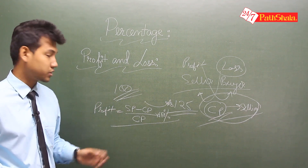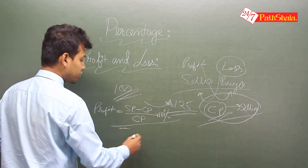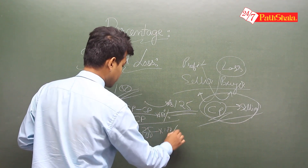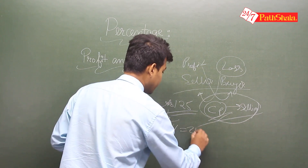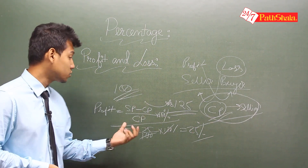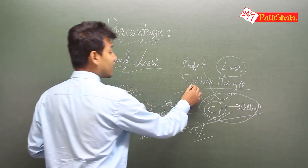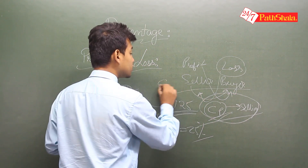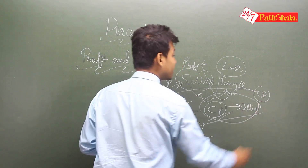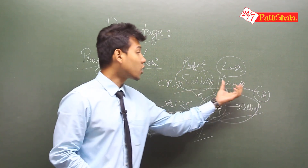In this case, SP minus CP is 125 minus 100, which gives 25, divided by 100, multiplied by 100 percent — so this is 25% profit. Students should not get confused about which CP to use. For the seller, CP and for the buyer, CP are two different things, which is why CP is a relative term.